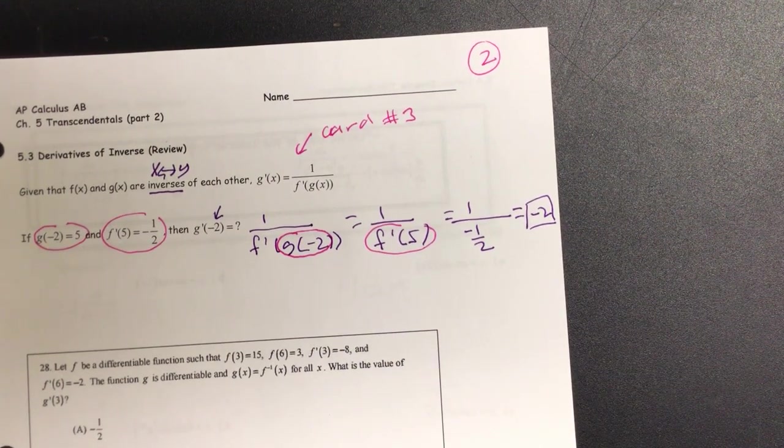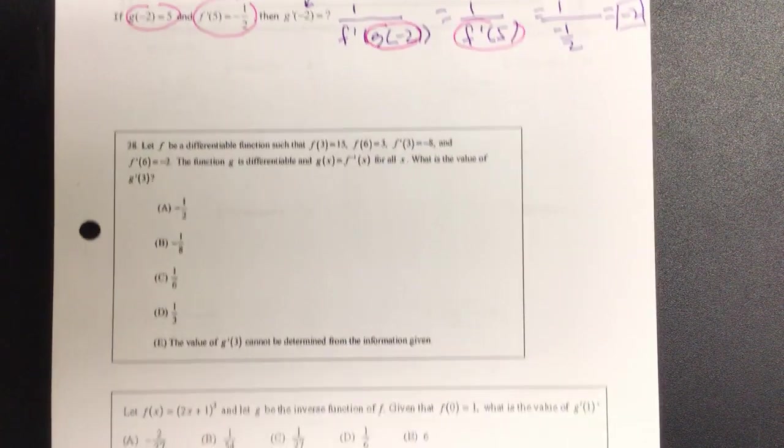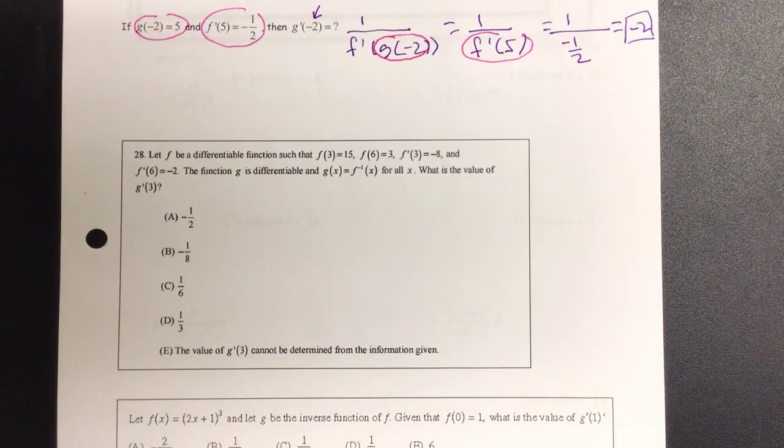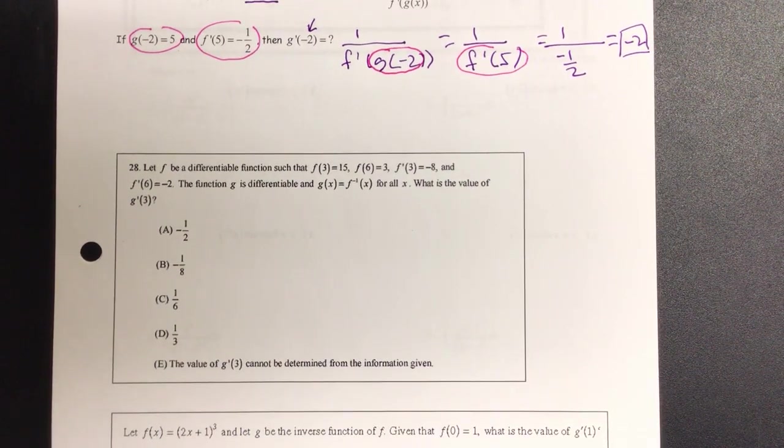All right, let's go on to the next one. Milo, let's read the box below. Let f be differentiable functions such as f(3) equals 15, f(6) equals 3, and f'(3) equals negative 8, and f'(6) equals negative 2. The function g is differentiable, and g(x) equals f inverse of x. What is the value of g'(3)?